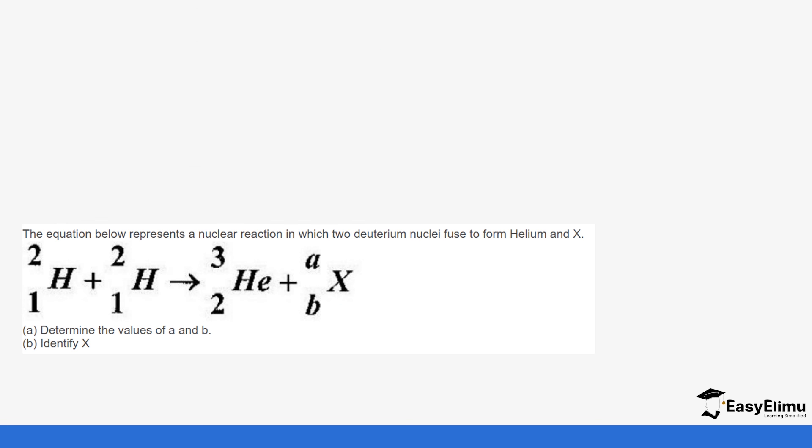So let's do this final question that will help us to close the session. So the equation below represents a nuclear reaction in which two deuterium nucleus fused to form helium and x. So we have the hydrogen they are fusing to form helium. So it is two plus two which is four, four minus three which gives us one so this is going to be one. And then one plus one is giving us two, this is going to be zero. So the identity of x is a neutron.